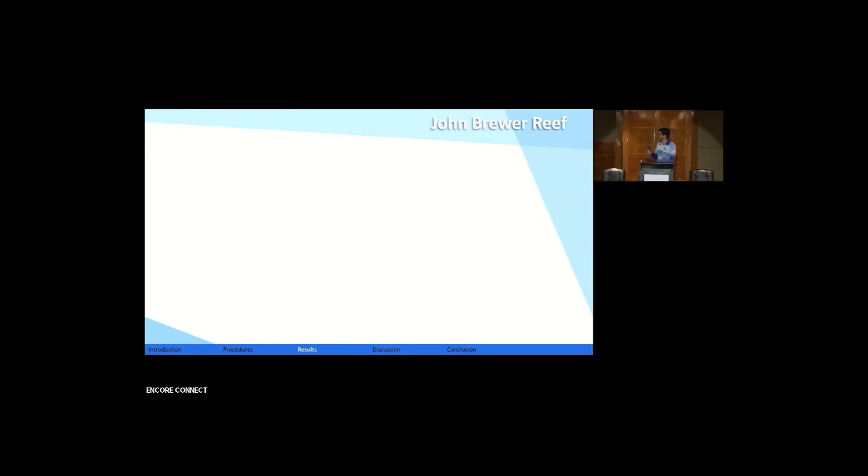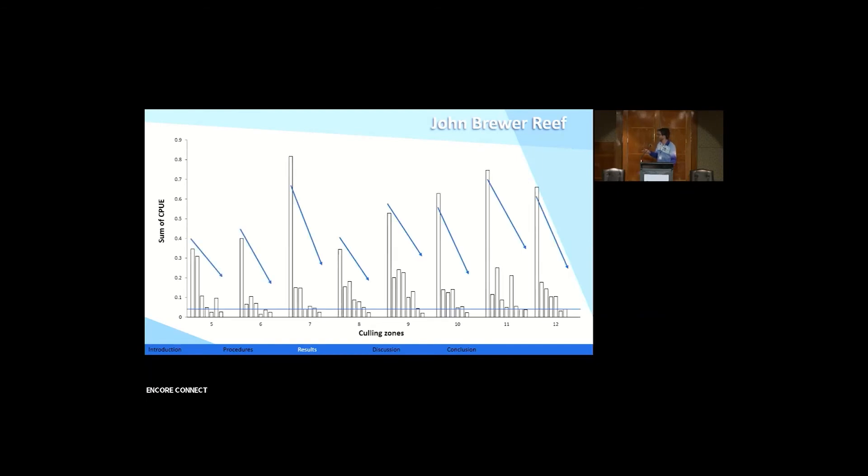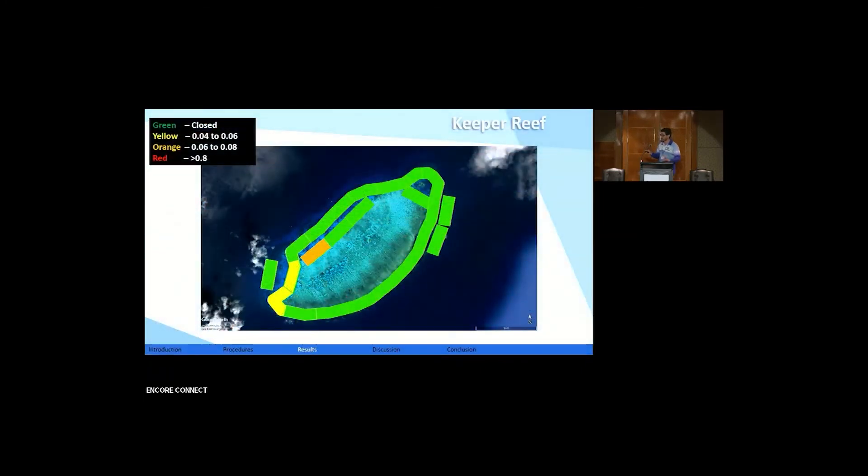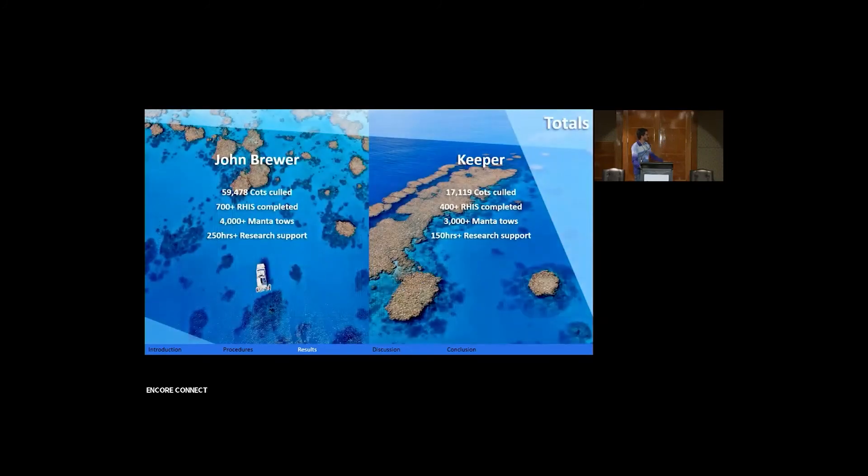That's John Brewer. I had a couple graphs, but they already talked about them and dropping our CPUEs quickly, so I'm going to skip past them because I know we're pressed for time. Keeper, I don't have the same slideshow for Keeper, but that's to show you what Keeper looks like. In the same sort of regard as with John Brewer, but Keeper's not put up the same fight. It's a much smaller reef. It was much more manageable and those outer circumference zones aren't getting replenished like John Brewer was.